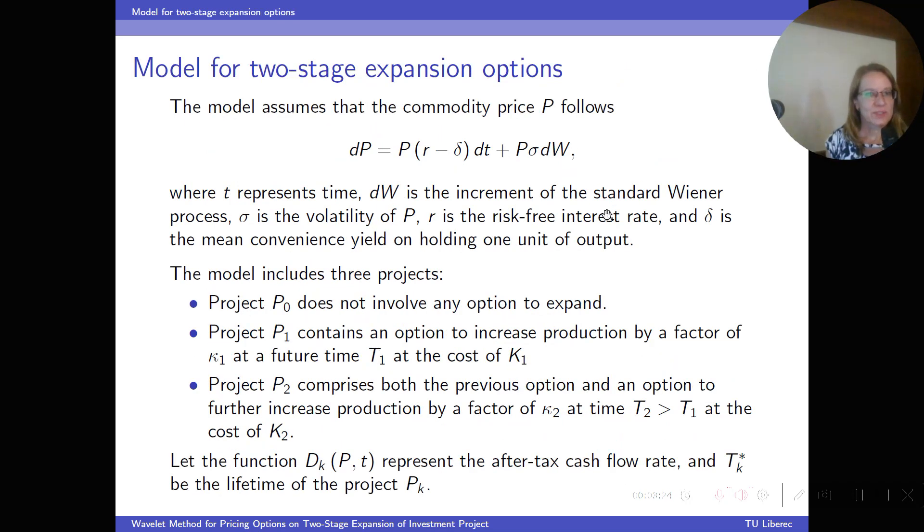The model assumes the commodity price follows geometric Brownian motion. Here T represents time, W is the Wiener process, sigma is the volatility, R is the risk-free interest rate, and delta is the mean convenience yield on holding one unit of output. And in fact, the model includes three projects.